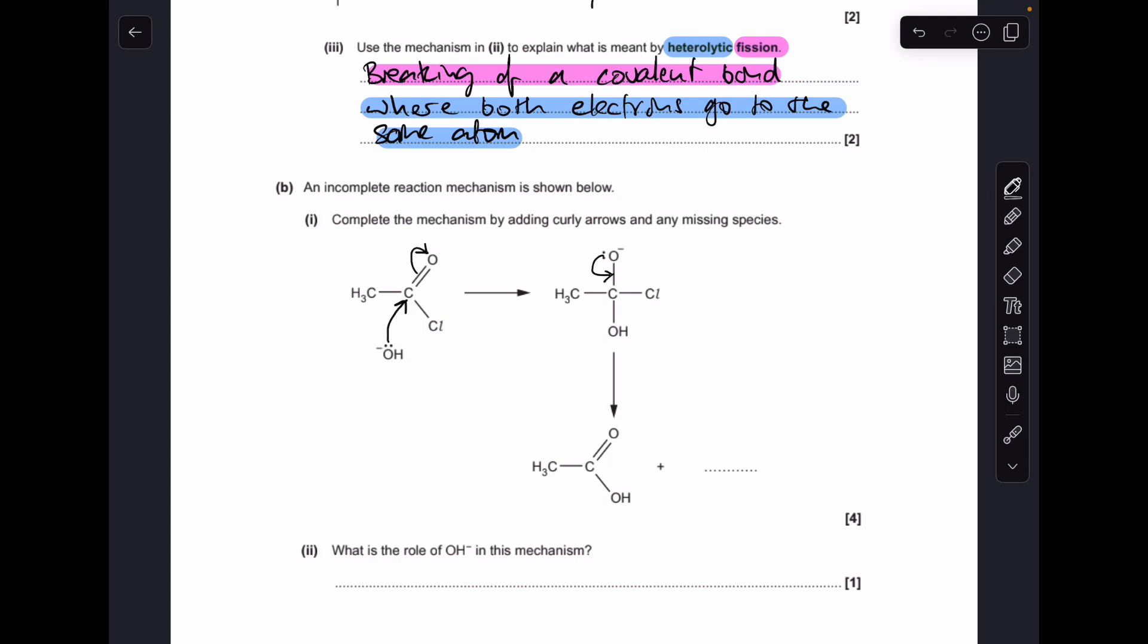And to get rid of that chlorine, we've got heterolytic fission again. A pair of electrons from the bond onto that Cl. And the Cl will now be a Cl-. And if you want to put a lone pair on there, you can. You don't have to.